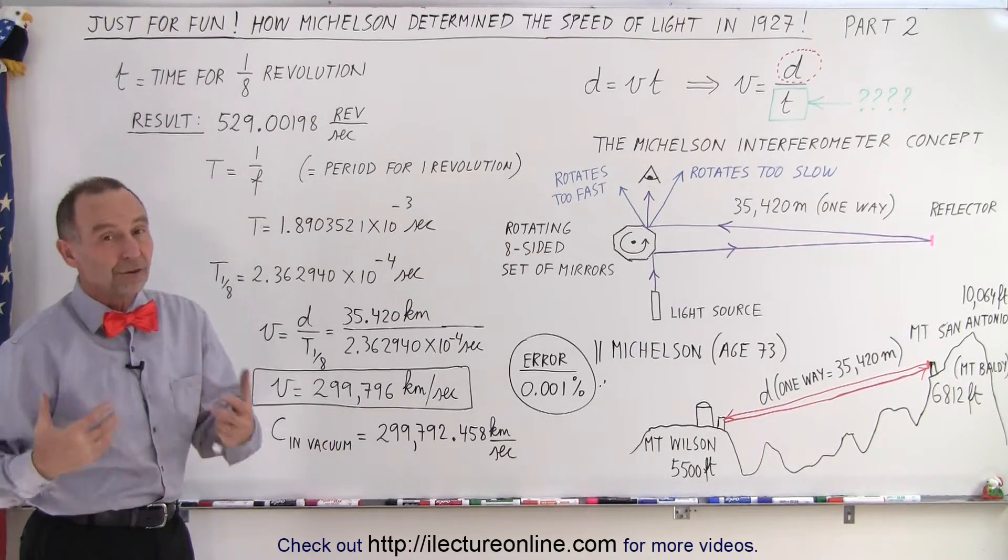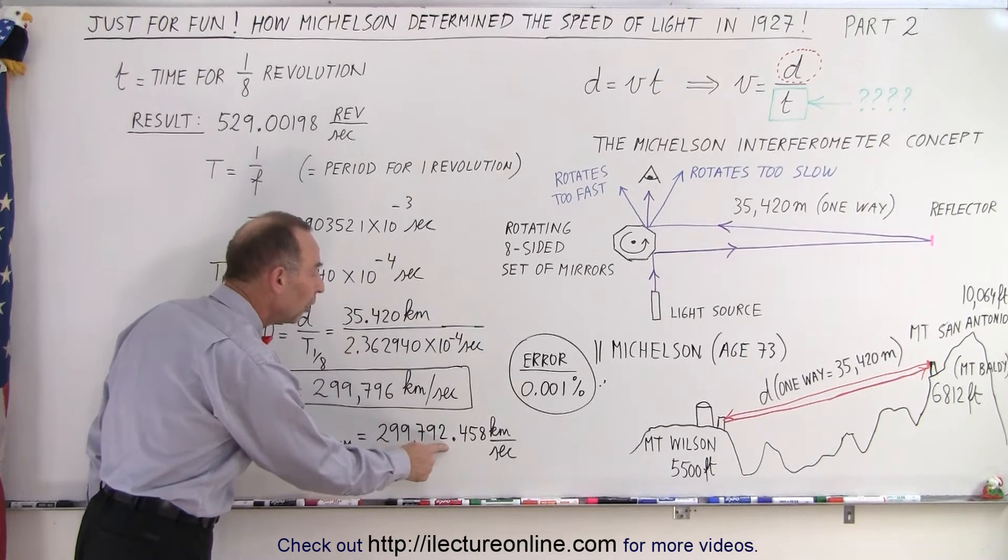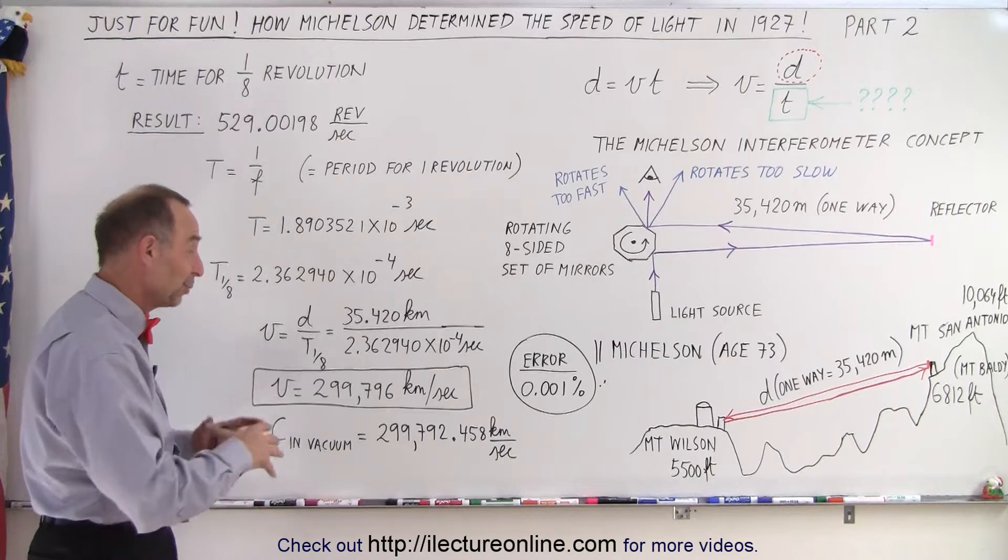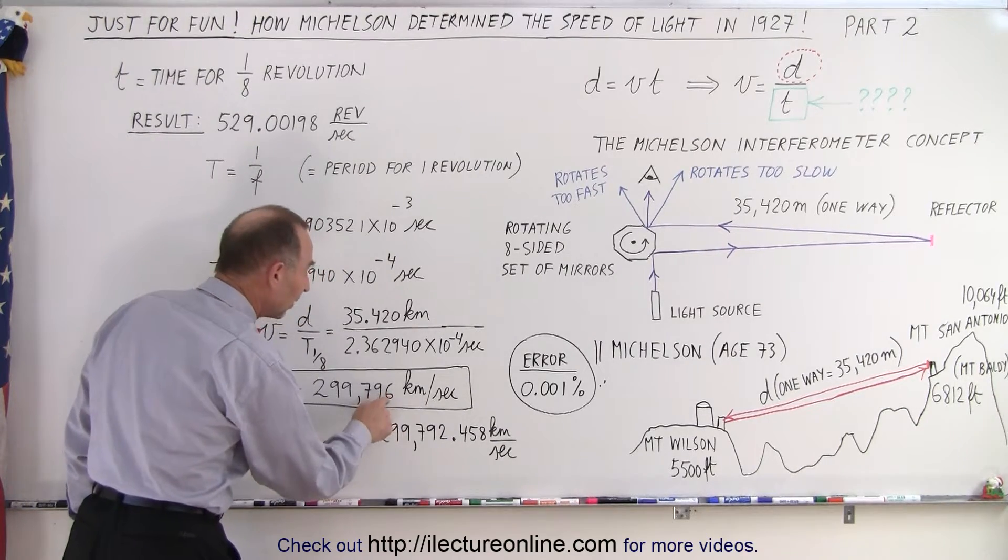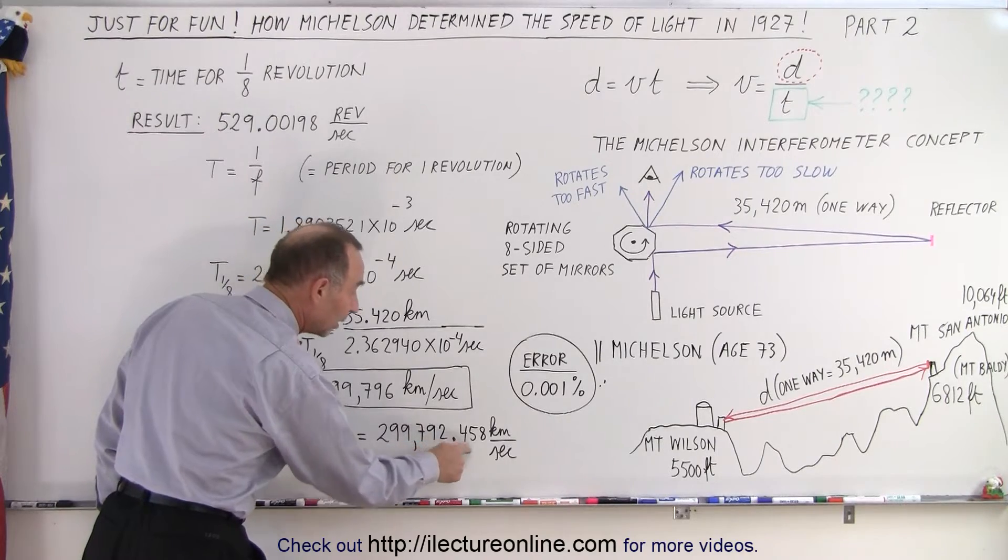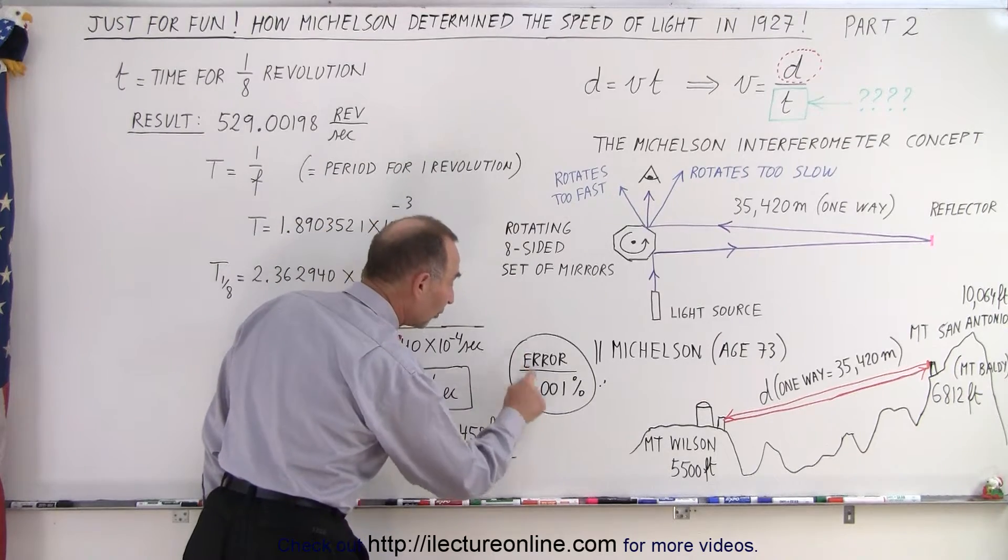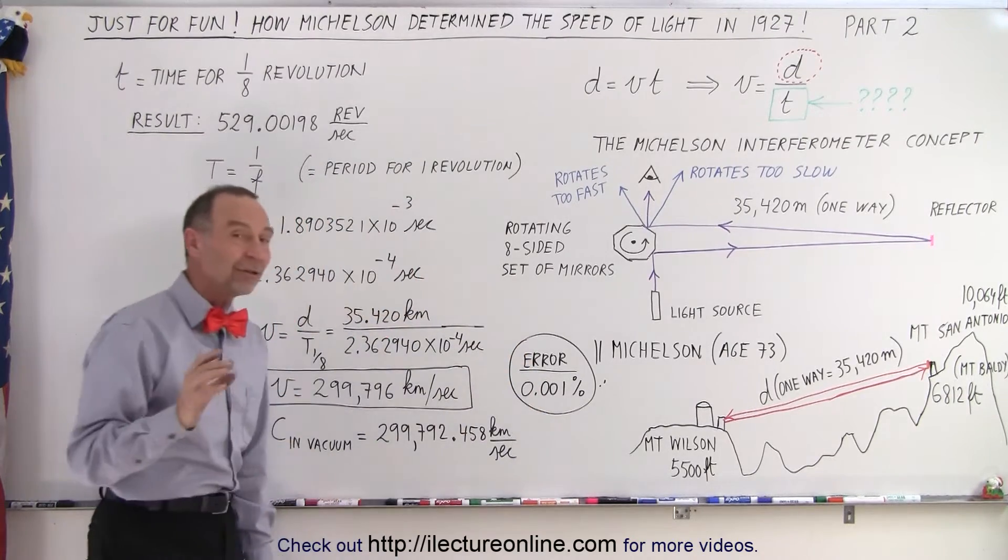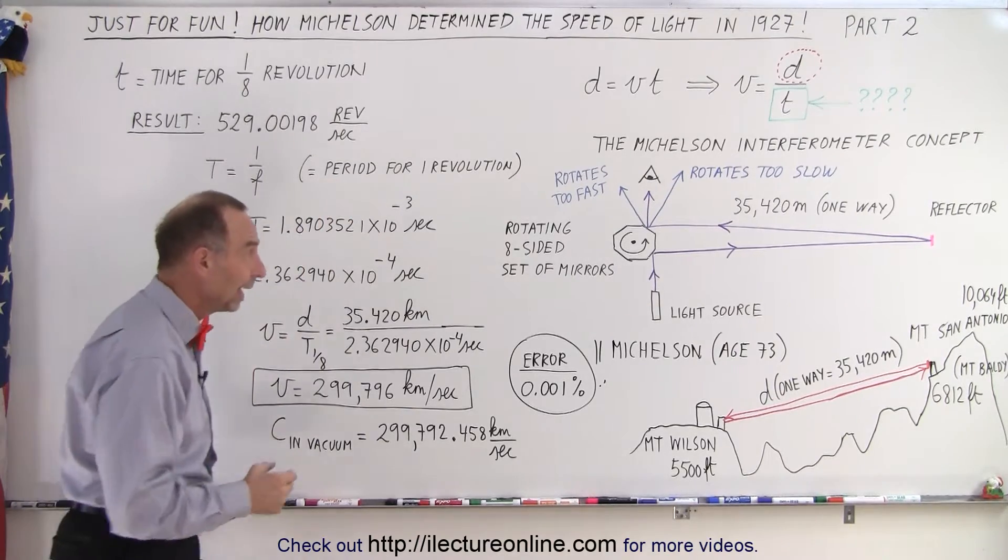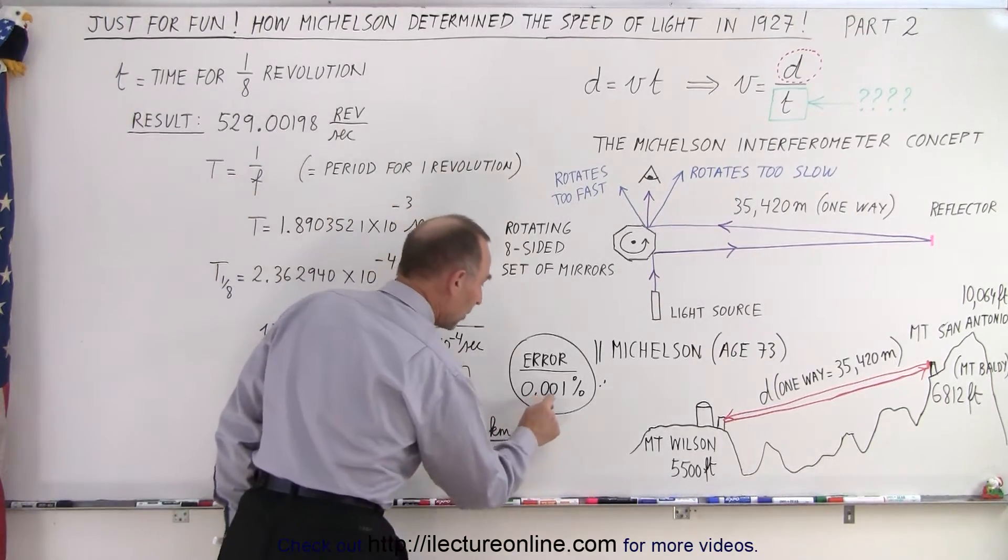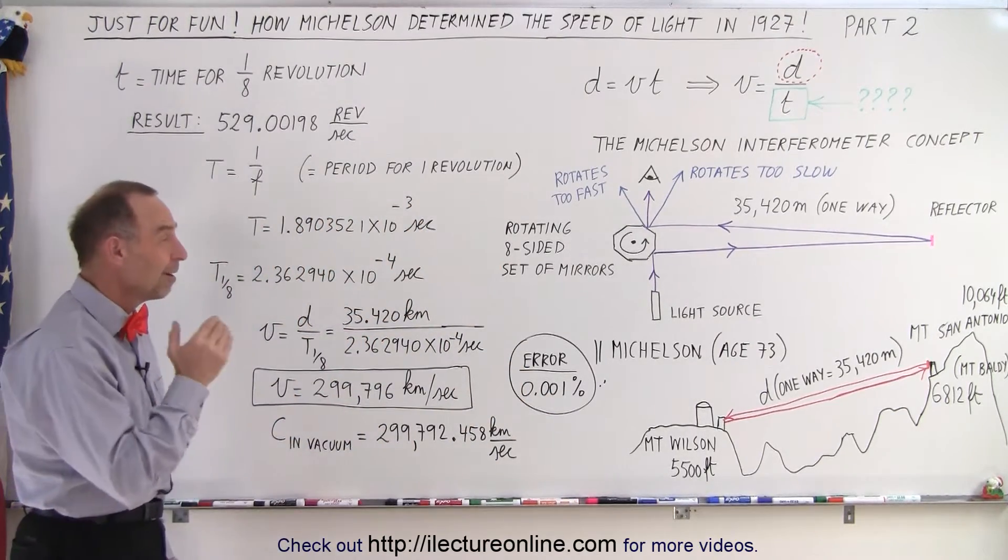Now, of course, with our modern technology, we've determined that it's actually 299,792.458 kilometers per second, if you want to be really accurate. But notice the last digit instead of a six, it's actually a two or a little bit more than two. They were actually off by only 0.001%.